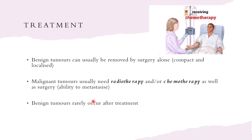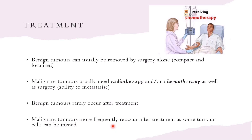Benign tumors rarely reoccur after treatment. Because they were compact and localized when removed by surgery, it is unlikely that any tumor cells were left in the tissue to restart the tumor. Malignant tumors more frequently reoccur after treatment because some tumor cells can be missed — malignant tumors metastasize, meaning cells can travel to other parts of the body, and you can never be certain all malignant cells were removed, so secondary tumors may restart.